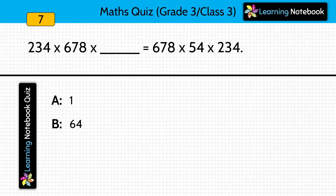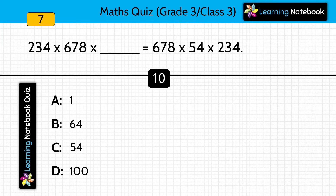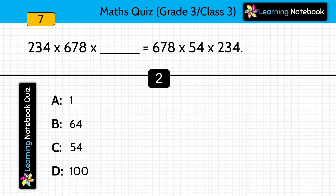Question seven: 234 times 678 times blank equals 678 times 54 times 234. What should be written in the blank? The answer is 54.